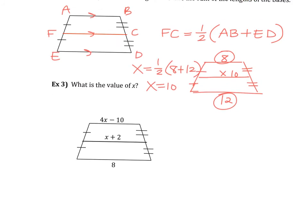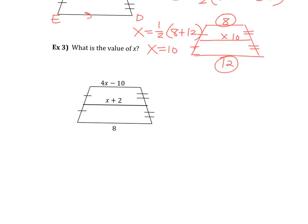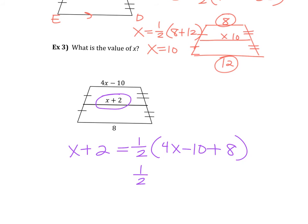How do you set it up then if we have these expressions instead? How would you set this one up? What's the standalone? Which segment? It would be the X plus 2. The mid-segment is always the one that's by itself. So it's going to be X plus 2 equals half of what? 4X minus 2. It's 4X minus 10 plus the 8, but really that's 4X minus 2 simplified.